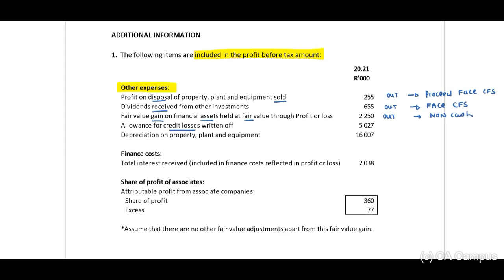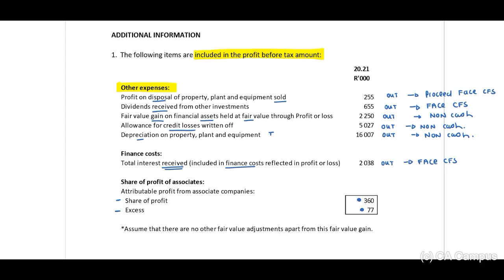Allowance for credit losses written off — we need to take this out because this is non-cash. Depreciation — we need to take this out because this is non-cash, and we need to transfer this to our T-account. Finance cost: total interest received included in finance cost reflected in profit or loss — we need to take this out because we need to disclose this on the face of our cash flow statement. Share of profit of associates: attributable profit from associate companies — the share of profit is 360,000 and excess 77,000.